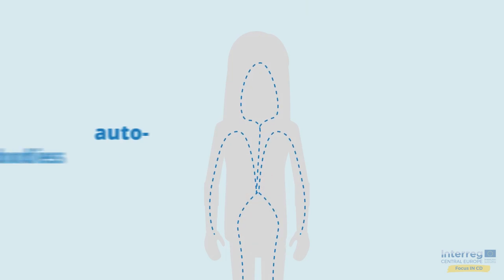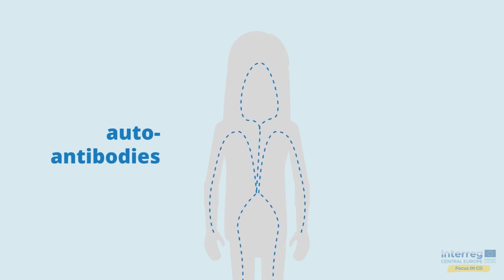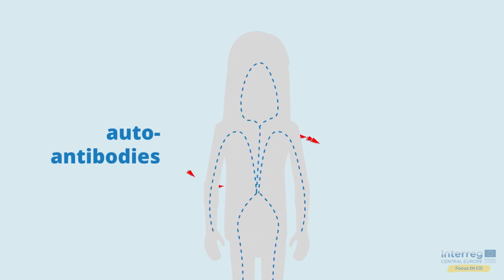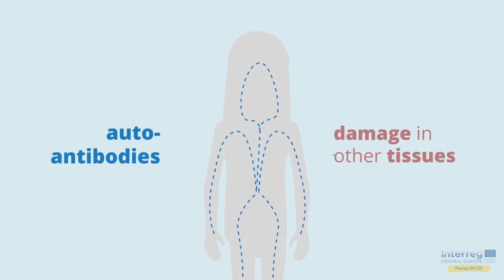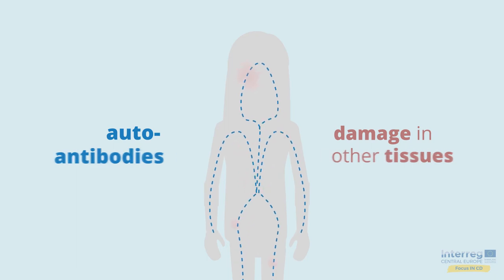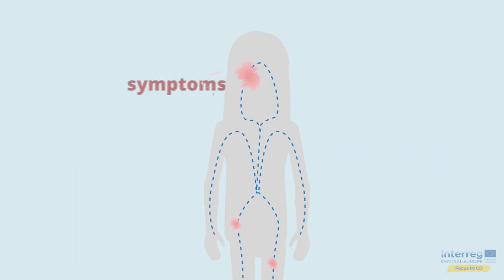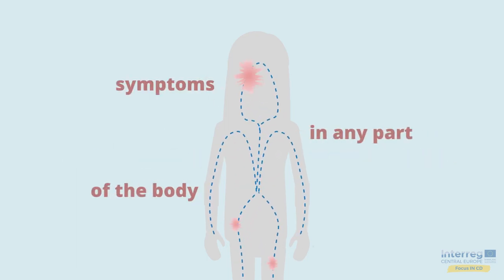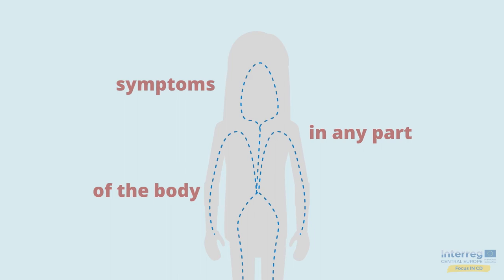The immune cells and auto-antibodies travel throughout the whole body and may cause damage in other tissues. Therefore, symptoms can occur in almost any part of the body.